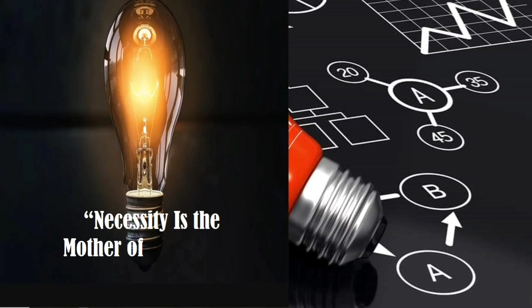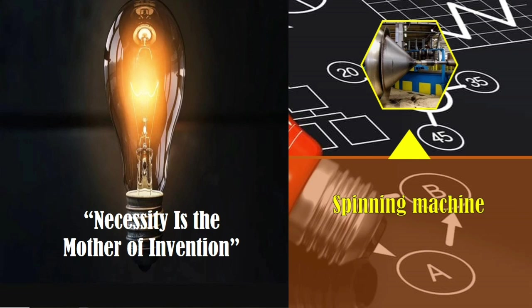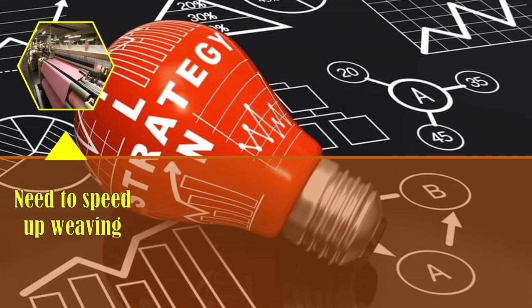It was known that necessity is the mother of invention. And out of necessity, several things have been invented resulting in the industrial revolution, particularly in Europe. One of which is the spinning machine — a machine that processes prepared cotton, roving it into yarn or thread. This was necessary in order to speed up weaving.